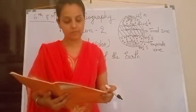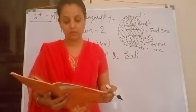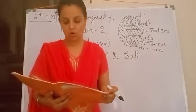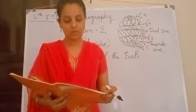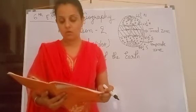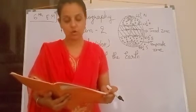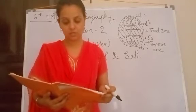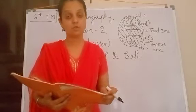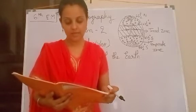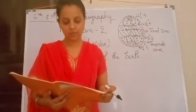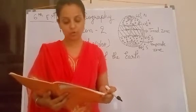The midday sun never shines overhead on any latitude beyond the Tropic of Cancer or the Tropic of Capricorn. The angle of the sun's rays goes on decreasing towards the poles. As such, the area bounded by the Tropic of Cancer and the Arctic Circle in the northern hemisphere...